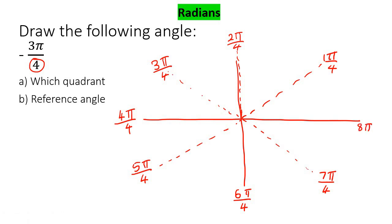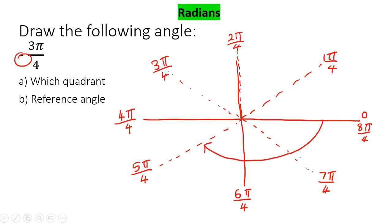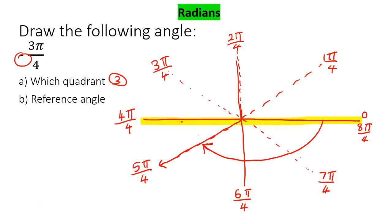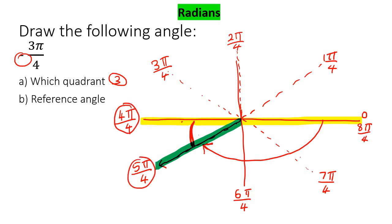Now if they give us -3π/4, they want us to go three parts backwards. Because it's a minus, I'm going backwards - not counterclockwise but clockwise. So that's 1, 2, 3, and we draw our terminal side. That's quadrant 3. To find the reference angle, highlight the x-axis and the terminal side. From 4π/4 to 5π/4, if you subtract them, that's just π/4. So that is your reference angle.